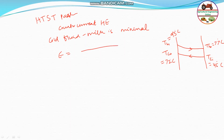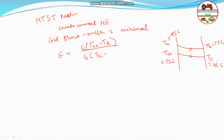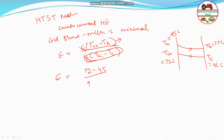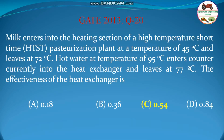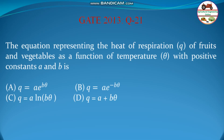The effectiveness formula is: ε = C_c × (T_co − T_ci) / [C_c × (T_hi − T_ci)]. The C_c cancels out, giving ε = (72 − 45) / (95 − 45) = 27 / 50 = 0.54. Therefore, the effectiveness of the HTST pasteurization heat exchanger is 0.54. The answer is (c) 0.54.